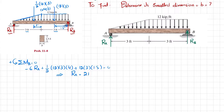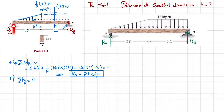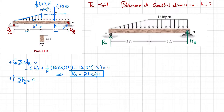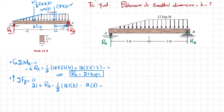With RA = 21 kips, we apply the second equilibrium condition: the sum of all forces in the y-direction equals zero. Upward forces RA and RB minus the triangular load (1/2·12·3) minus the distributed load (12·3) must equal zero. Solving gives RB = 33 kips.